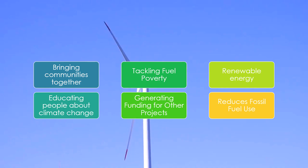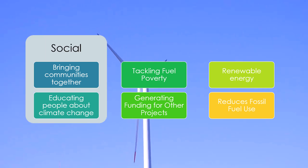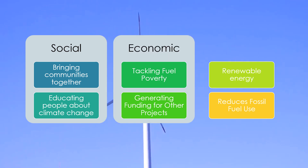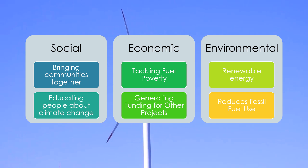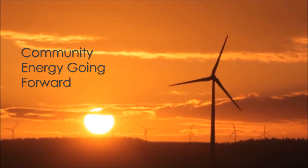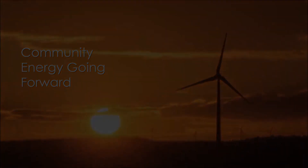Community energy addresses the three pillars of sustainability: the social, by bringing communities together and educating people about climate change; the economic, by tackling fuel poverty and generating funding for other projects; and the environmental, by using renewable energy and reducing fossil fuel use. There are over 5,000 community energy projects in the UK currently and by 2050 the national grid estimates that 65% of energy in the UK could be locally generated. Community energy is going to be crucial to decarbonise the UK economy.